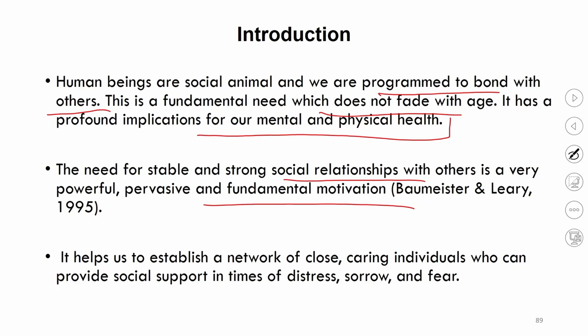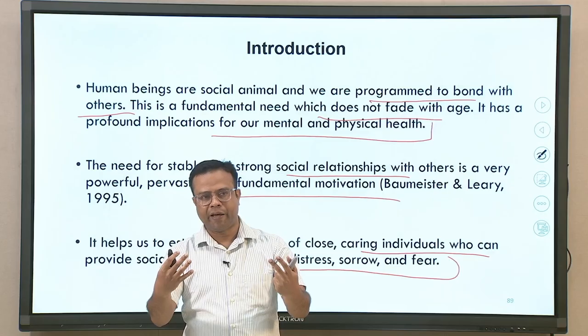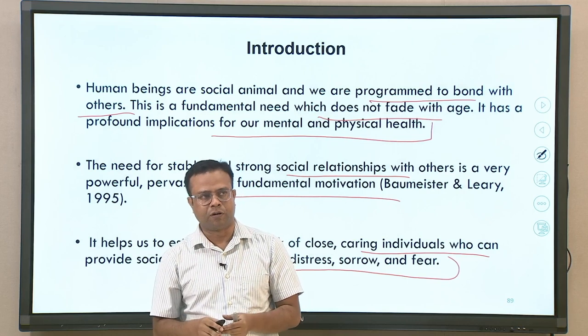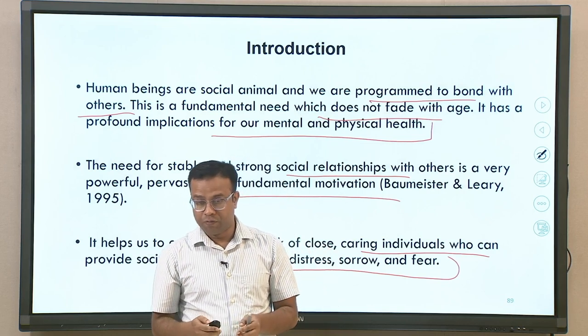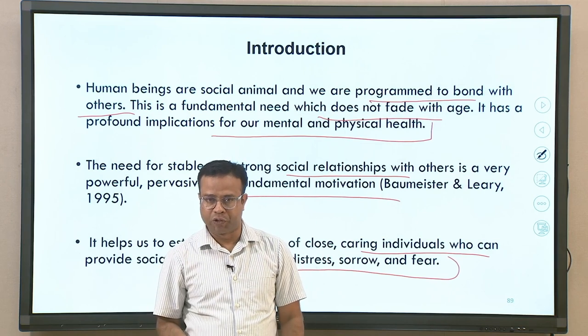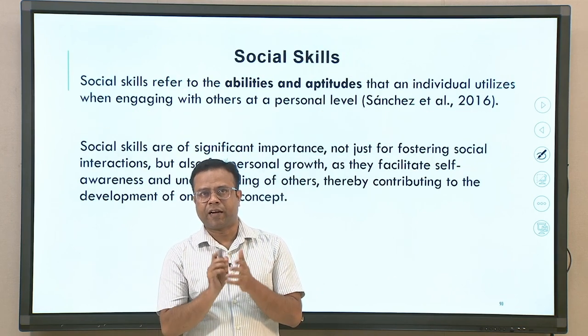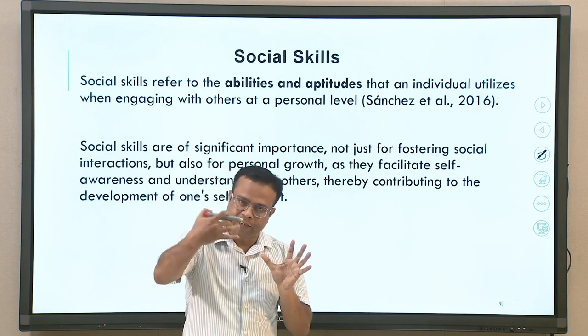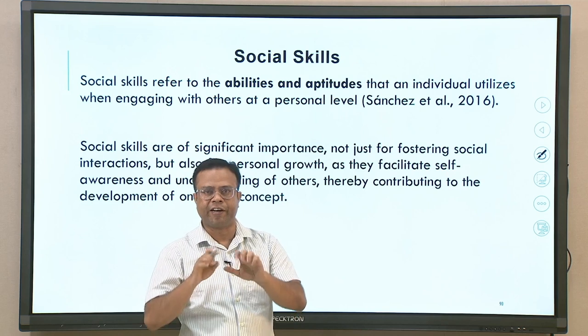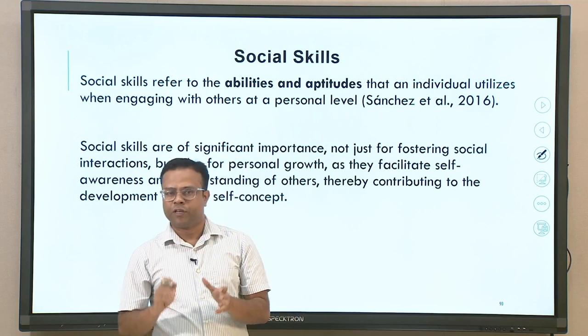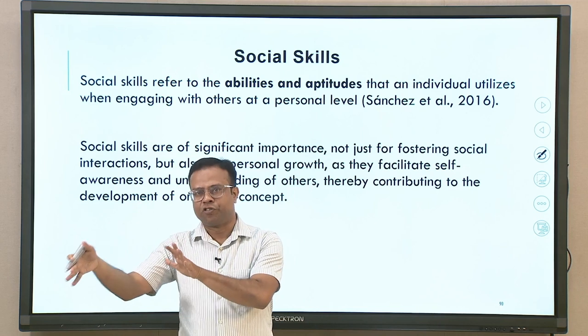The need for stable and strong social relationships with others is a very powerful motivation. Human beings want to connect and create bonds, which is connected to both physical and mental health. It helps us establish a network of close, caring individuals who can provide social support at times of distress, sorrows, and fears. Social skills play a very important role in facilitating the ability to create support systems and networks of individuals.